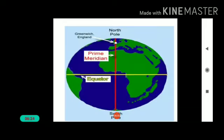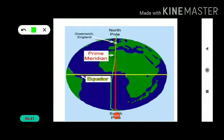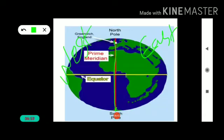The prime meridian divides the Earth into two equal halves — that is the eastern hemisphere and the western hemisphere. Look at this picture. We can identify this: this is the prime meridian, and this prime meridian divides the Earth into two hemispheres. The right side is the eastern hemisphere and the left side is the western hemisphere.